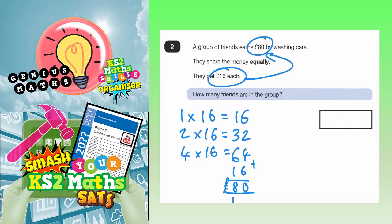So we were on 4 16s, so add on an extra 16 to get 80, that must now make it 5 16s. So 5 16s are £80.